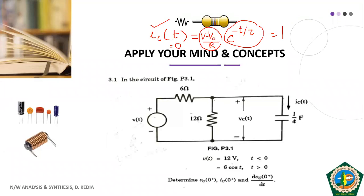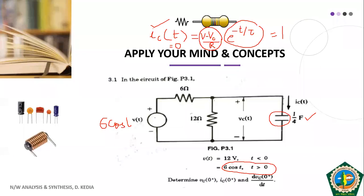We need to find the values of V, V_not, and R. V is the applied voltage across the capacitor. For T greater than 0, the applied voltage is 6 cos T, but this 6 cos T is across the full circuit. We need to find the voltage V directly across the capacitor, which is the same as the voltage across the 12 ohm resistance. So we apply the voltage divider rule for this 6 cos T voltage.